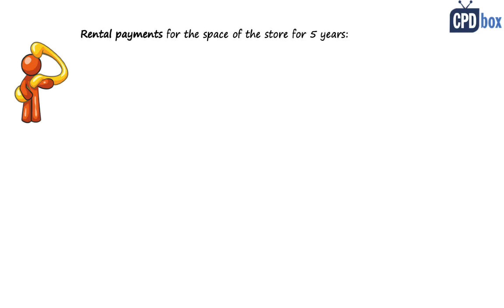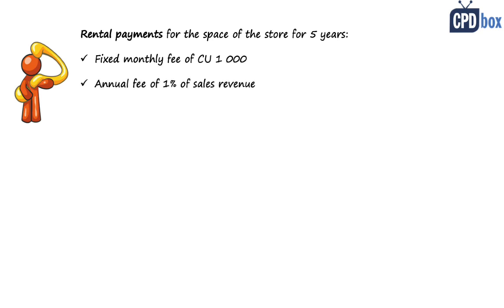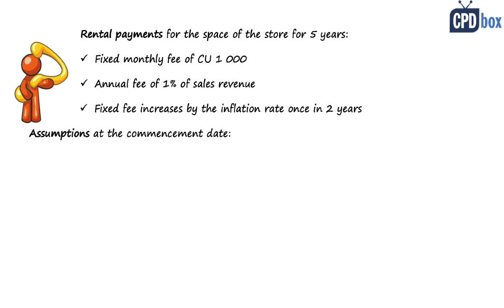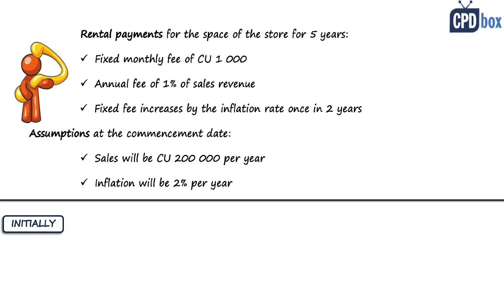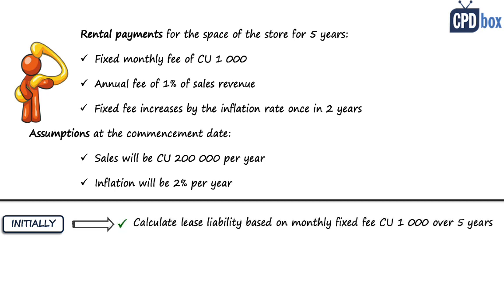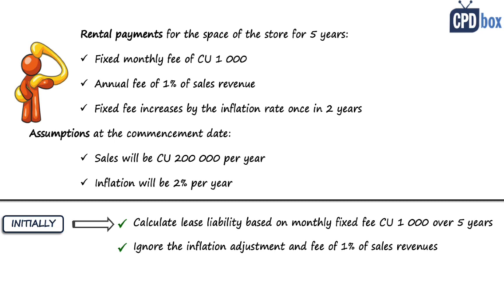Let me illustrate this with a short example. Imagine you rent a store space for five years and agree to pay a fixed monthly fee of 1,000 and an annual fee of 1% of your sales. The fixed fee will be increased by the inflation rate once every two years. At the commencement date you assume sales will be 200,000 per year and inflation will be 2% per year. Initially, you calculate your lease liability based only on the fixed monthly fee of 1,000 paid over five years, ignoring both the inflation adjustment and the 1% of sales fee.